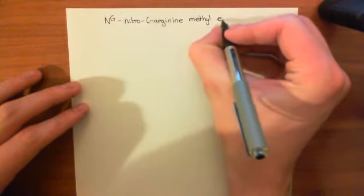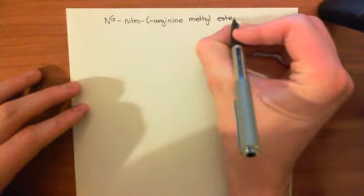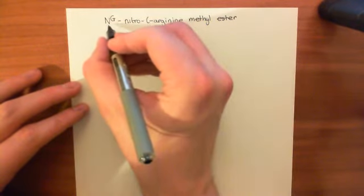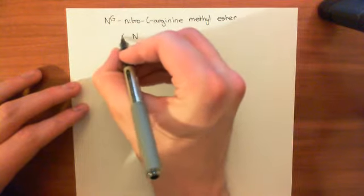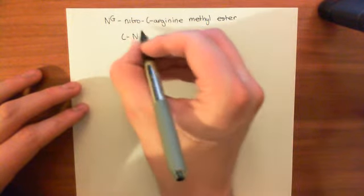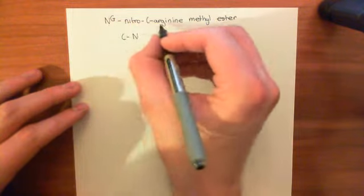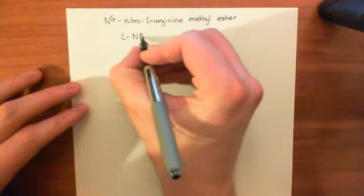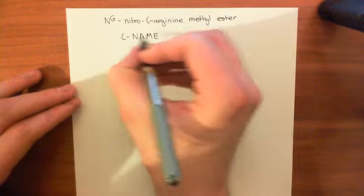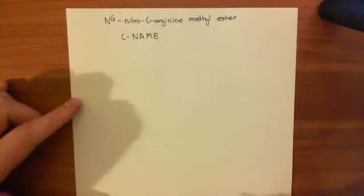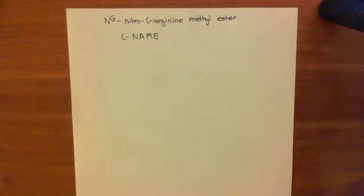Now let's turn our attention to another NOS inhibitor - NG-nitro-L-arginine methyl ester. This one has quite nice initials: you take the L out the front, then N, then A for arginine, M for methyl, and E for ester, and you get L-NAME. So let me show you the structure of L-NAME, which has an analogous structure to arginine.